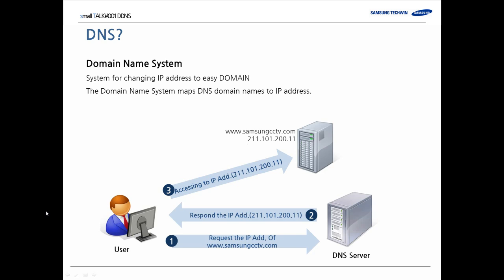For example, when I access the Samsung website, it has a domain name type address, but the numerical IP address is not easy to memorize. So I only need to input the domain name in the web browser. This is the Samsung CCTV website's domain name, and my computer requests the IP address of the Samsung CCTV web server.